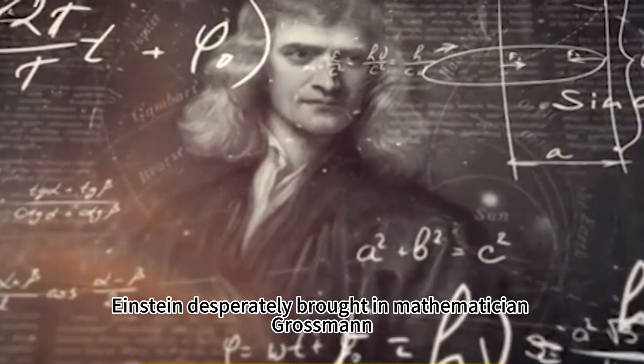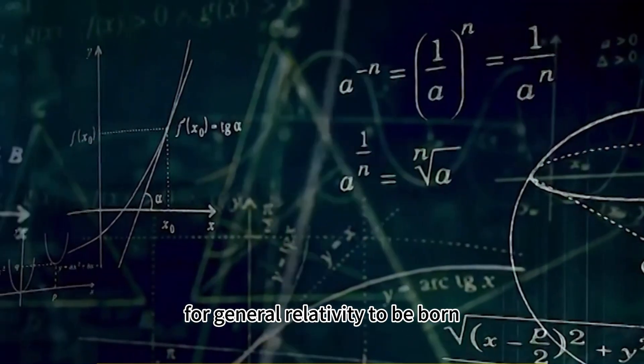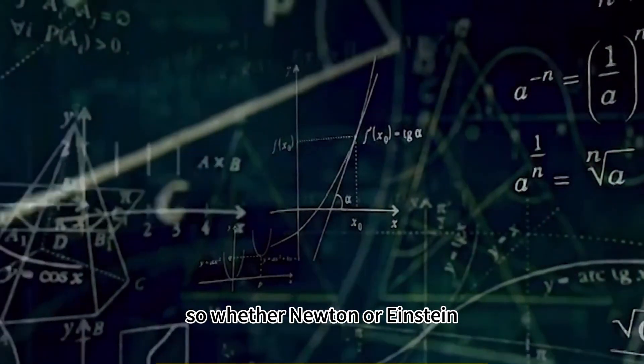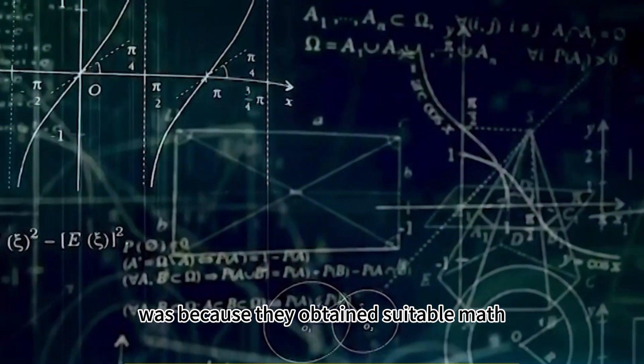Einstein desperately brought in mathematician Grossman, incorporating his great mathematical achievement, Riemannian geometry, for general relativity to be born. So whether Newton or Einstein, their deification in physics was because they obtained suitable math.